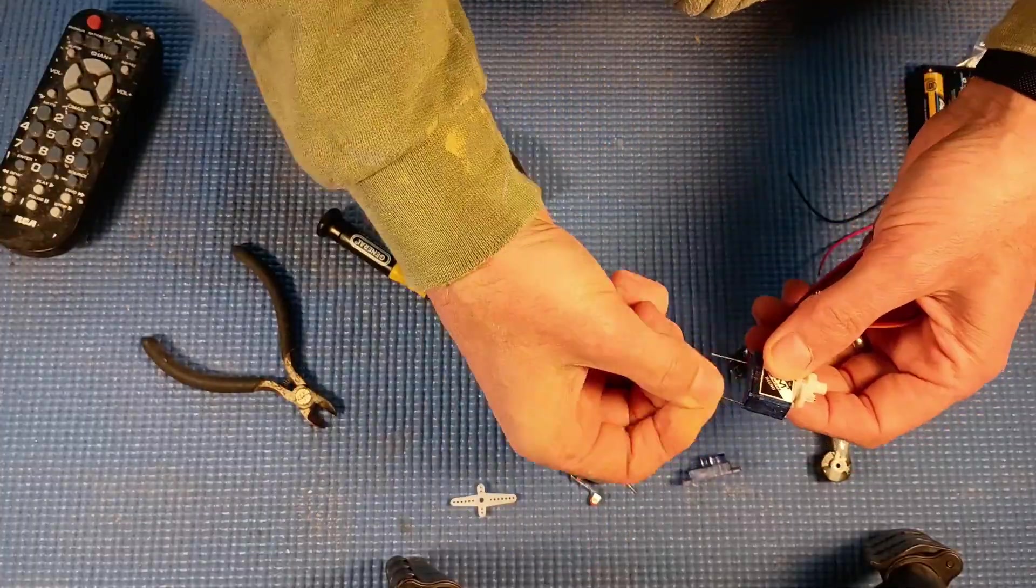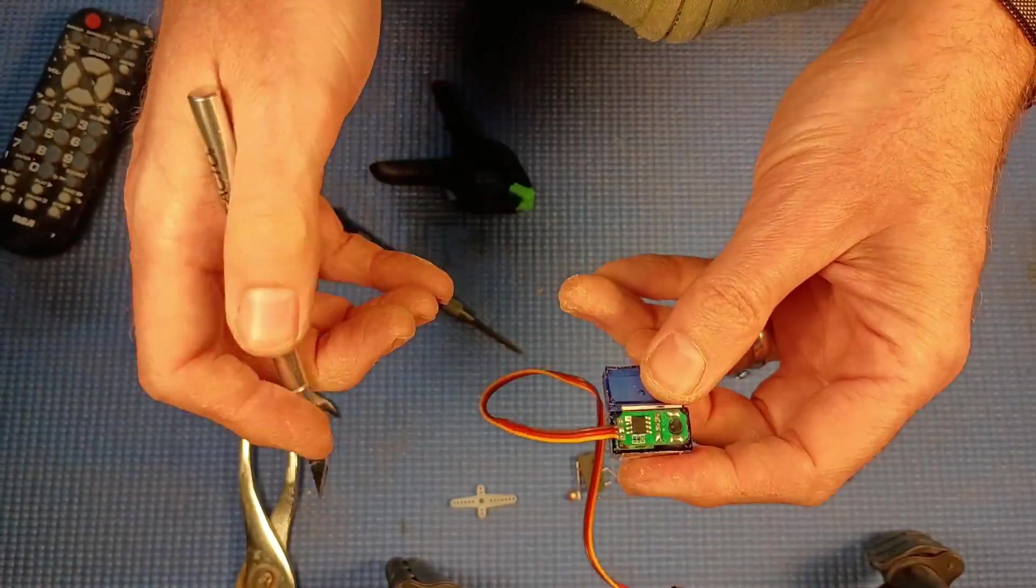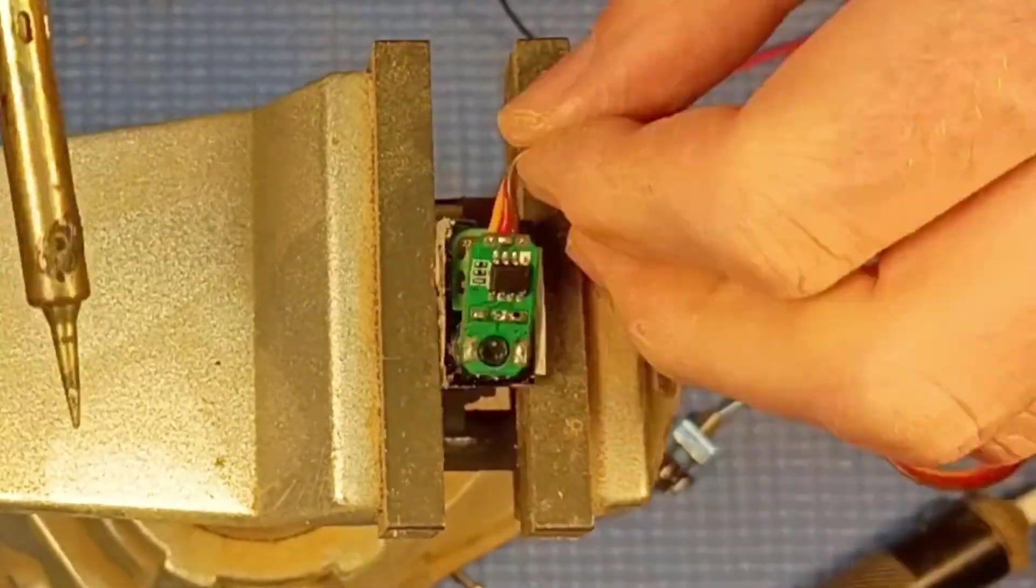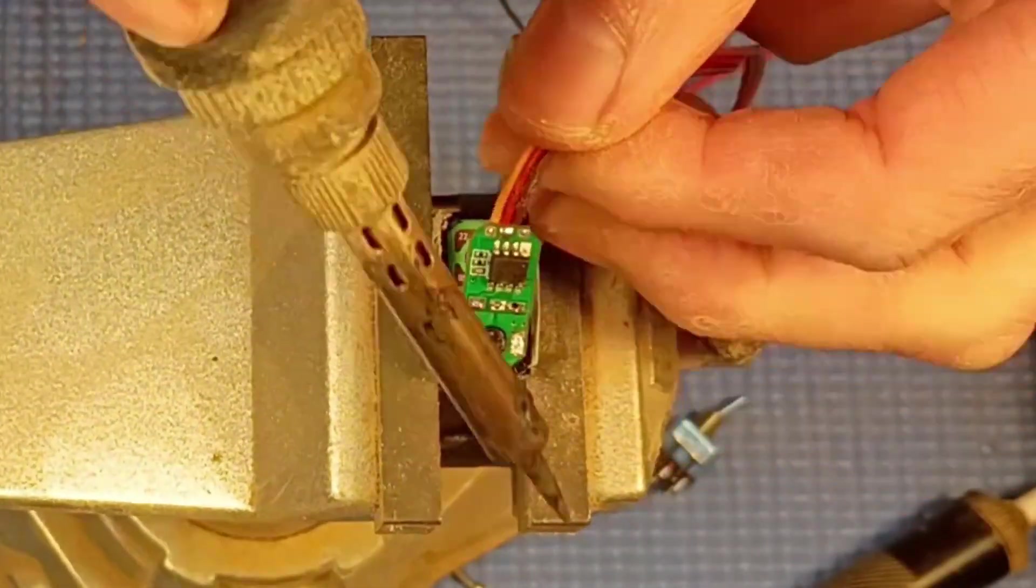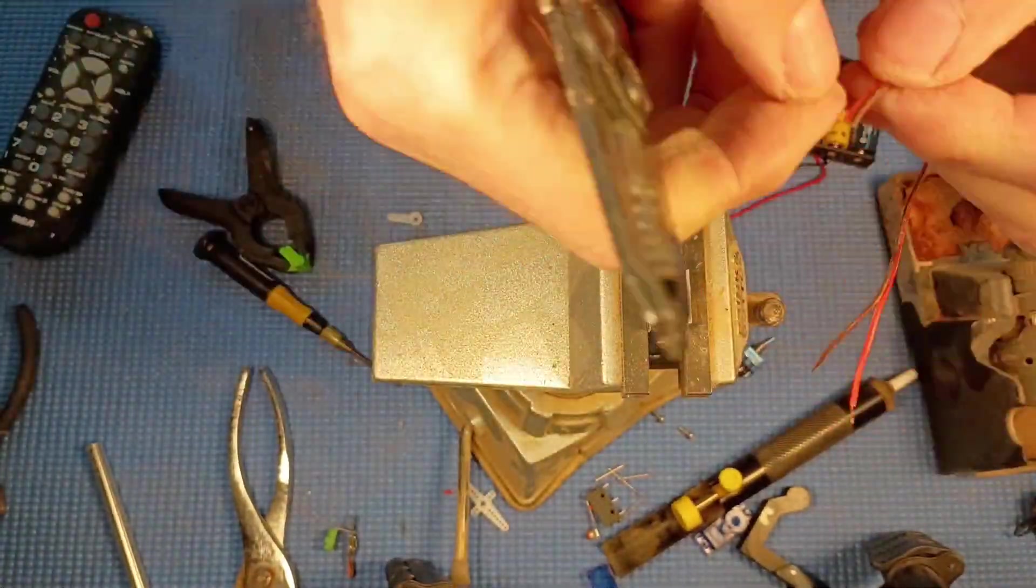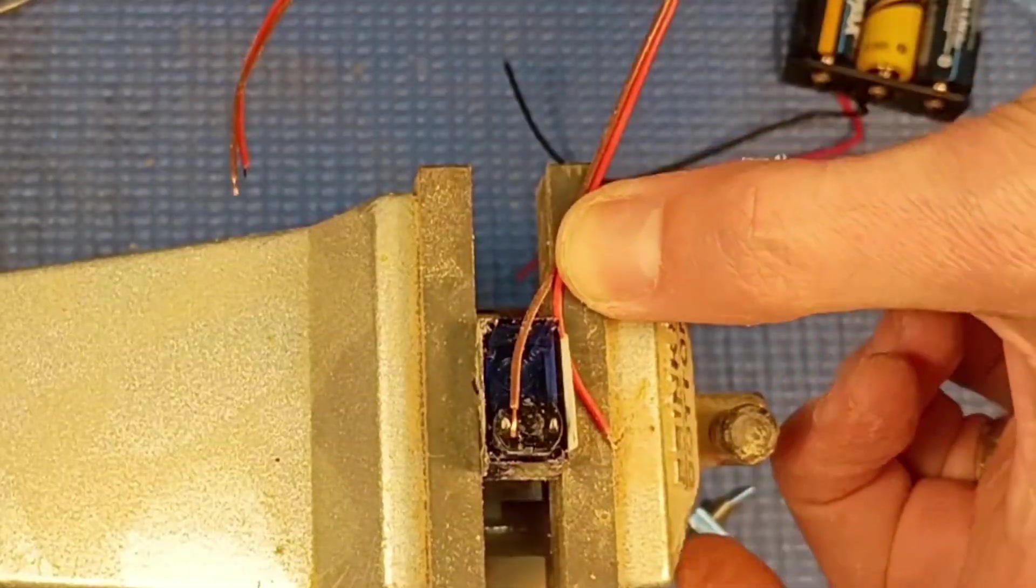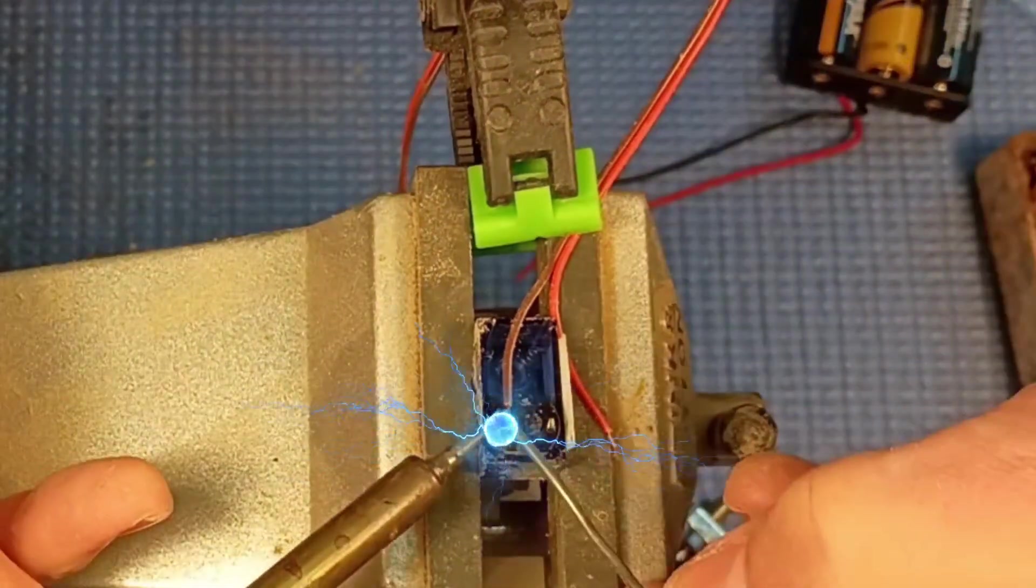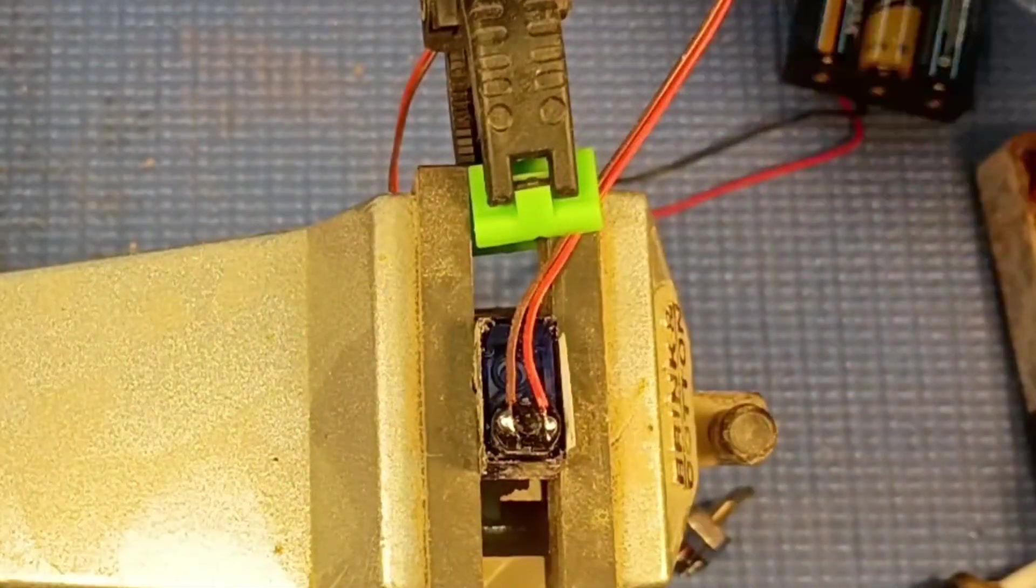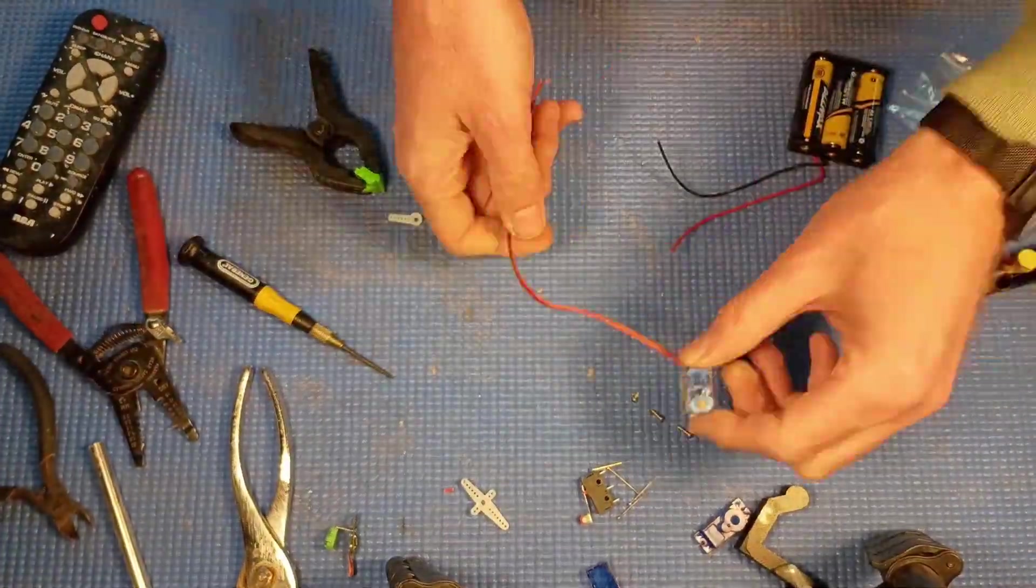The next step is to modify the servo. We take it apart and you can see there's a control board in there. We want to pull that control board out. So what we do is desolder the control board from the motor terminals. There's just two terminals there. Then we're going to cut that wire off of the control board and solder them directly to the motor. What we're doing here is changing it from a device that goes to a specific point in its rotation to make it just a motor and a gearbox that goes forward when you give it positive voltage and reverses when you give it negative voltage.